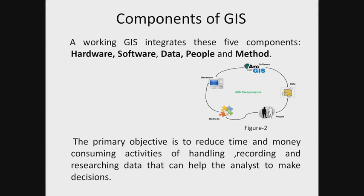Third is data — data is collected from different government departments, pre-uploaded from previous GIS studies, and primary data is also inserted by the user. Fourth are people — they are the main persons responsible for as well as dependent on the GIS analysis, as this analysis directly affects them. The last is method — this contains different methods used for analyzing different conditions using GIS software.